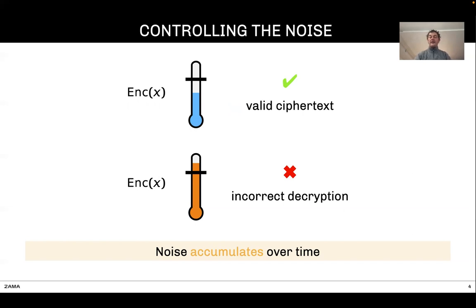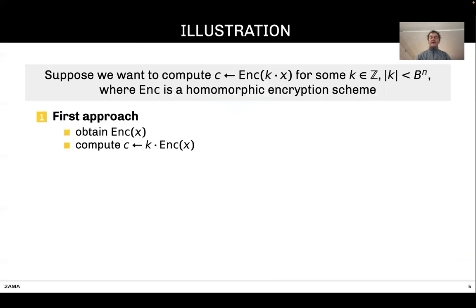There are two ways to do that. Here is an example. Assume there is some private data x and you'd like to compute k times x. The basic approach would be to first get the encryption of x, and then compute k times that ciphertext, giving you the encryption of k times x.